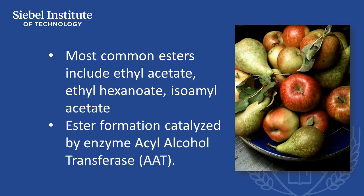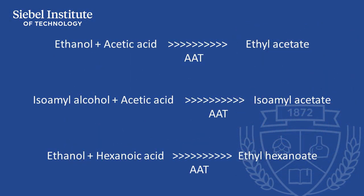This presentation applies to ethyl acetate, ethyl hexanoate, and isoamyl acetate, which are esters produced by a reaction of an acid with an alcohol. In yeast, this reaction is catalyzed by an enzyme called acyl alcohol transferase, or AAT. For example, ethanol and acetic acid form ethyl acetate; isoamyl alcohol and acetic acid form isoamyl acetate; and ethanol and hexanoic acid form ethyl hexanoate.